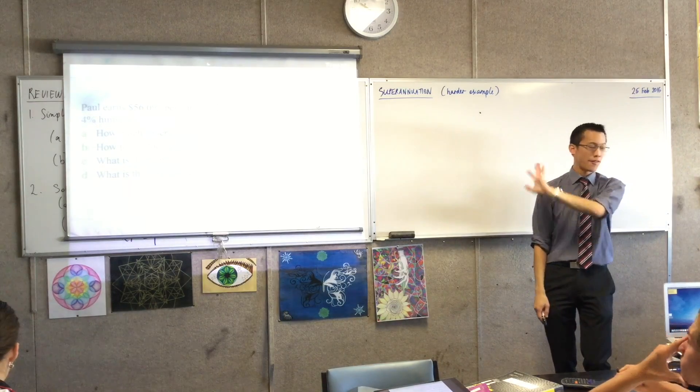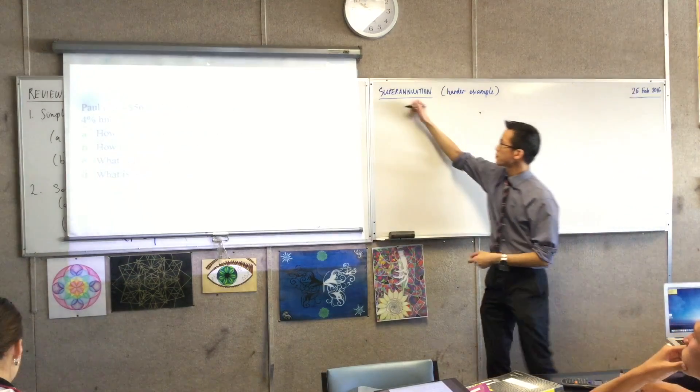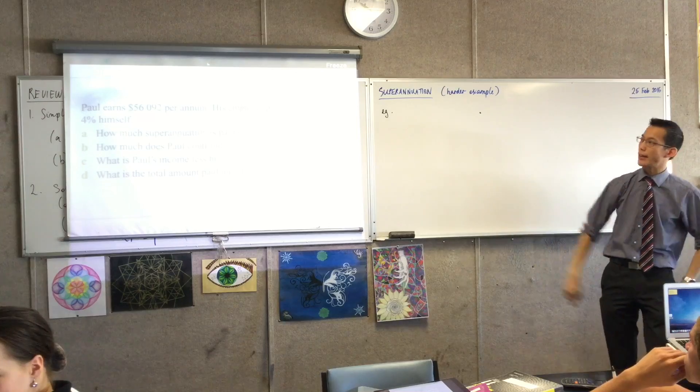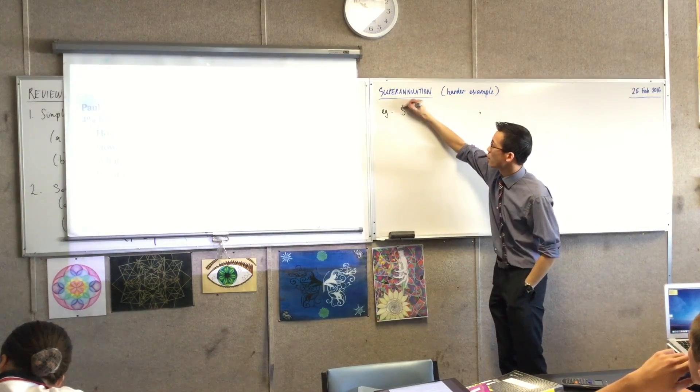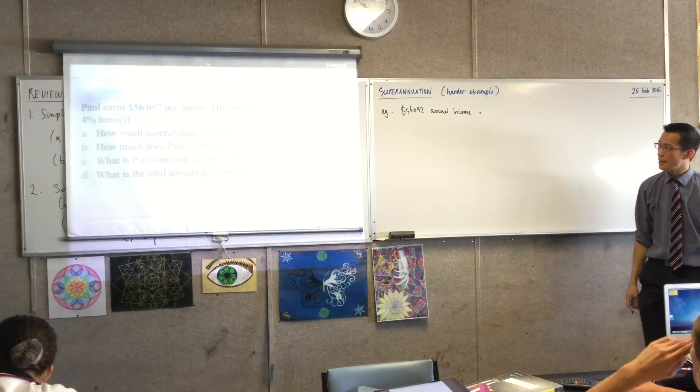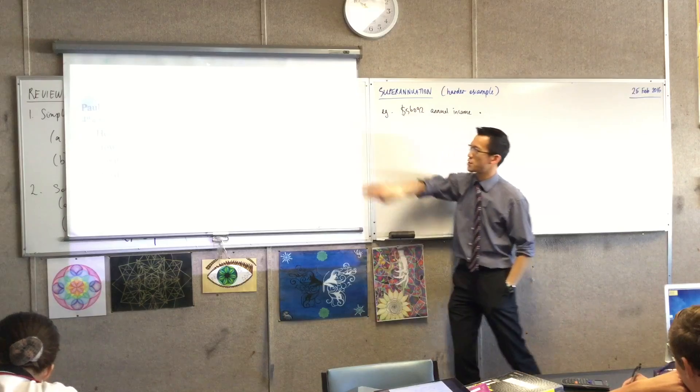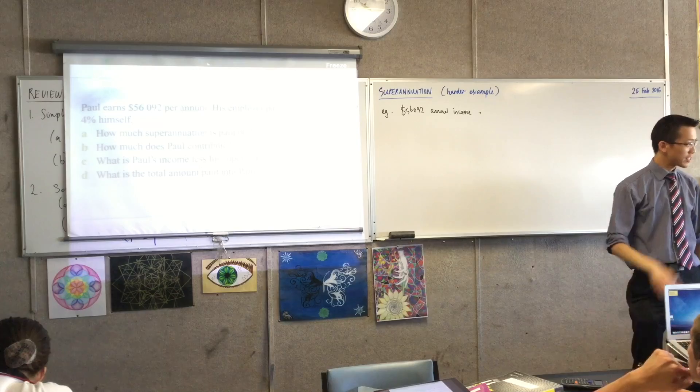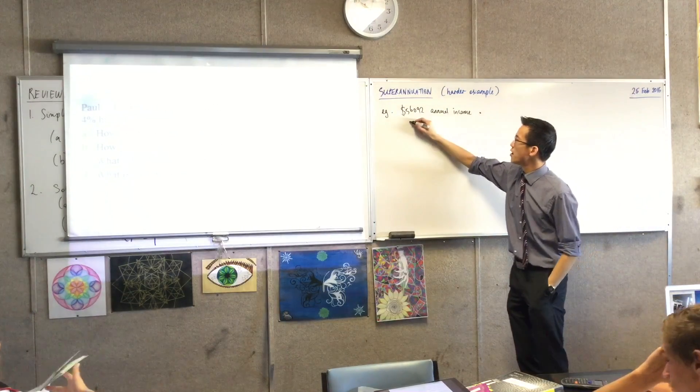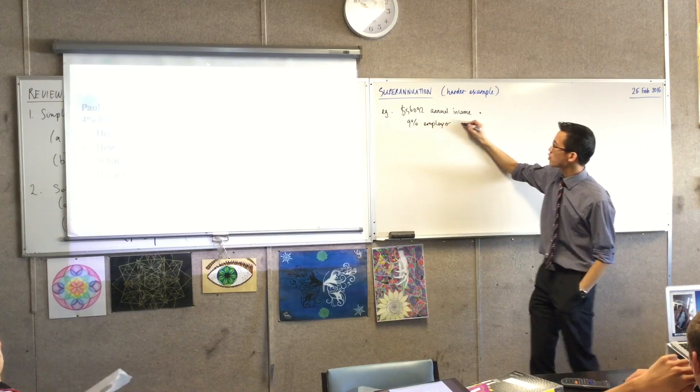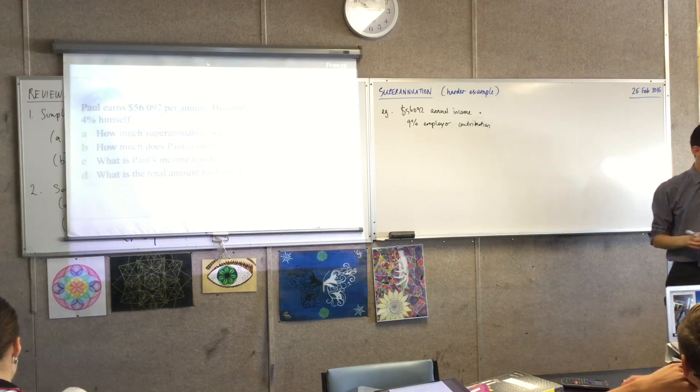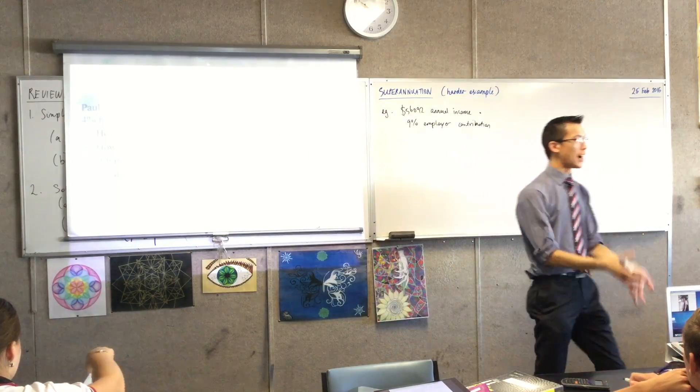As we've been doing with all our financial matters questions, let's start by getting the important details down. And then we're going to start to look at the questions and what they're asking for us to do with those numbers. So first we've got a salary. Paul has an annual salary. That's his annual income there. So I'm going to write $56,092. That's how much he's actually earning. His employer pays 9% superannuation. That's 9% of his income. So I'm going to call that employer contribution. 9% is the employer contribution.